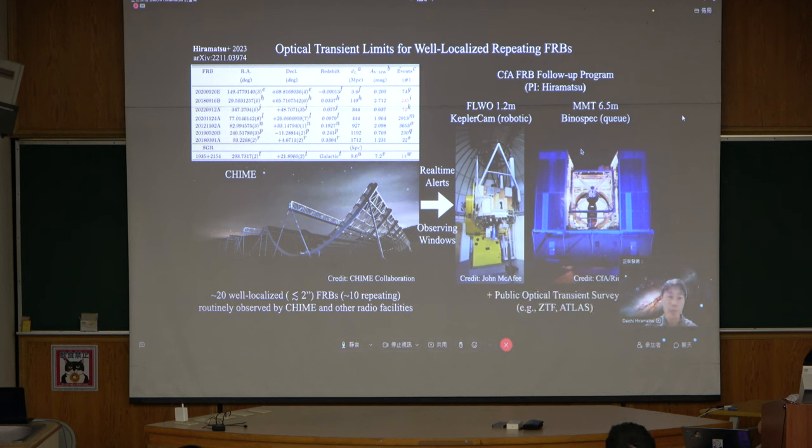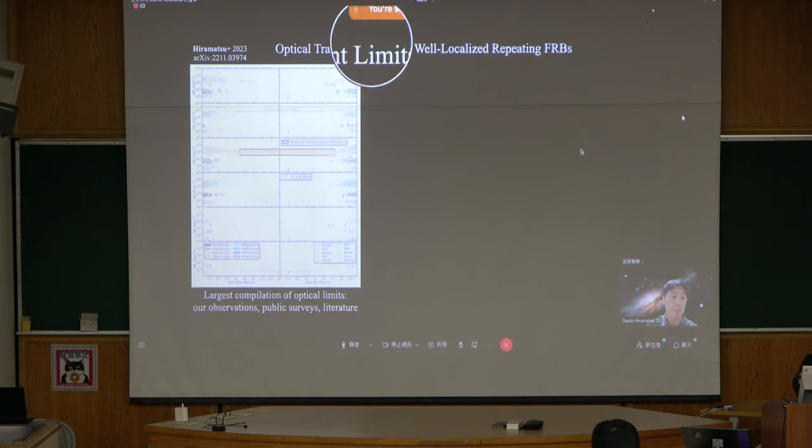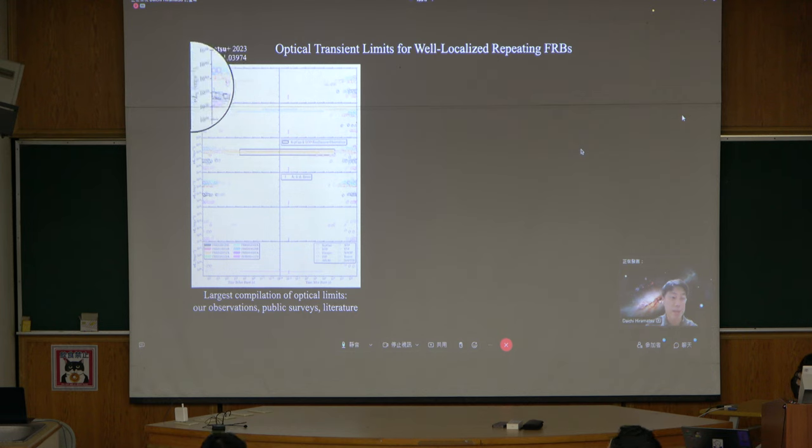What we are doing at CFA is follow-up and simultaneous observations with the CFA telescopes, like KeplerCam on 1.2-meter telescope, and also MagE/Binospec on 6.5-meter telescopes. KeplerCam is a robotic telescope, and Binospec is a new Q-system. These are really suited for this kind of optical counterpart search.